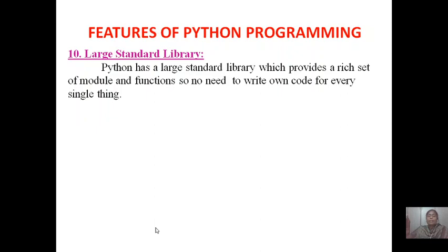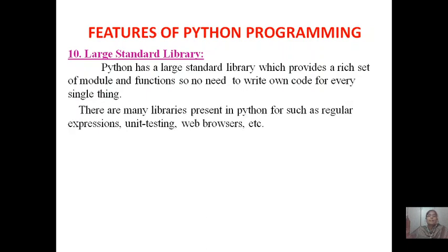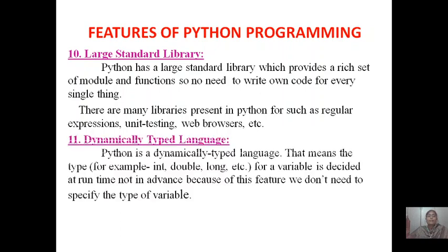Python has a very large standard library which will provide you almost every function that you need, so you don't need to write your own code for every single thing. There are many libraries present in Python for regular expressions, unit testing, web browsers, etc. It is also called dynamically typed language. That means the type, which is integer, double, and long for a variable, is declared in C language, but in Python you can directly use the variable, no need of declaration. At run time it will identify which type of data was stored in that.